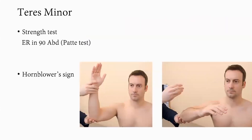Teres minor can be tested with external rotation in 90 degrees of shoulder abduction. The lag test is the horn blower sign: the arm is brought to 90 degrees of abduction and 90 degrees of external rotation, and the patient is asked to maintain this position. Failure to do so is a positive horn blower sign.